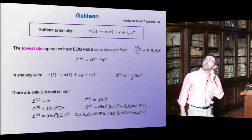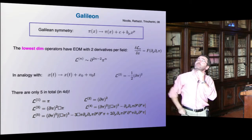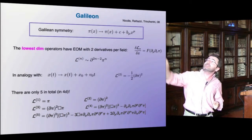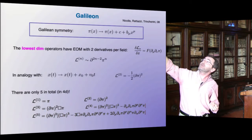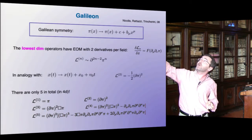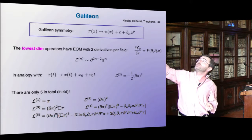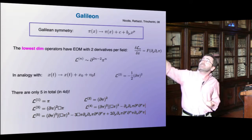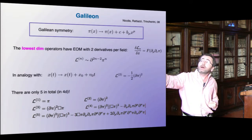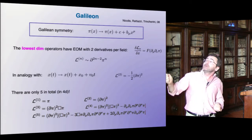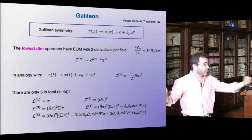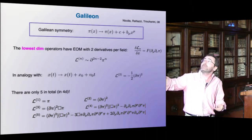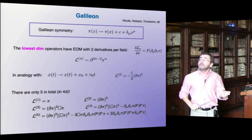So what is a Galilean? A Galilean is a scalar with a symmetry which is not just a shift symmetry, but also a shift of the derivative: ∂_μ π → ∂_μ π + b_μ, a constant vector. Why is it called Galilean? Because if you think about one-dimensional mechanics, the Galilean shift of the velocity is ẋ plus a constant — in one dimension it's the same as this, so that's why it's called Galilean invariance.